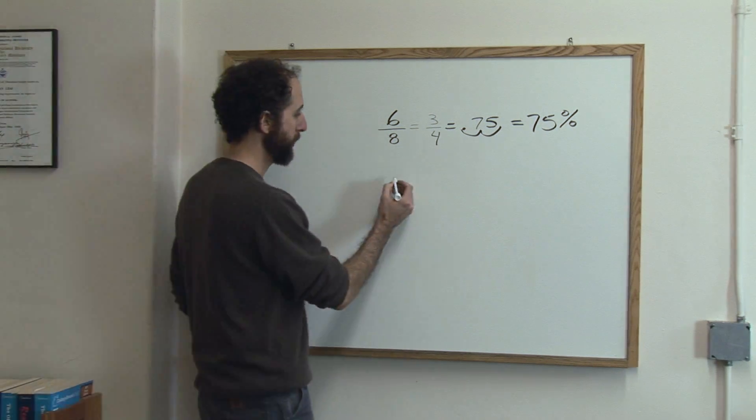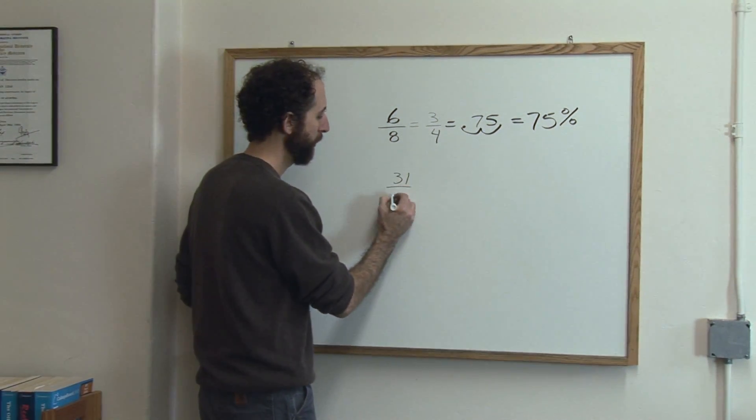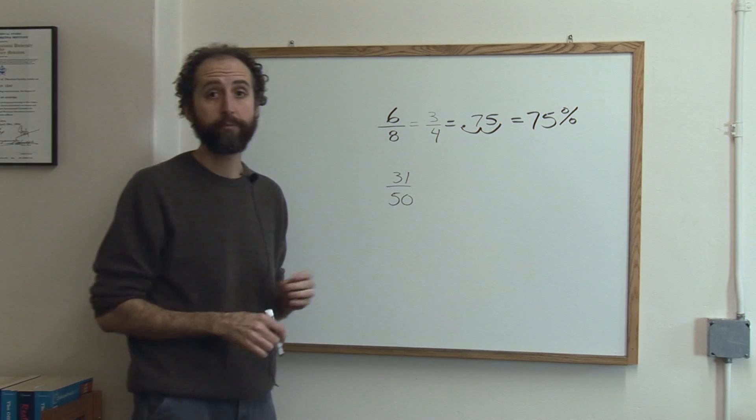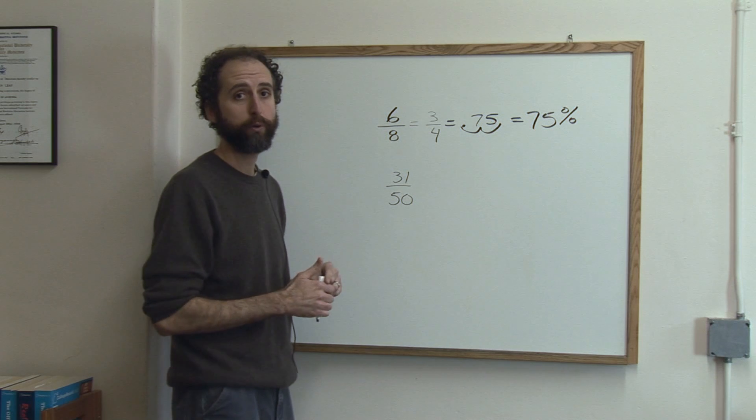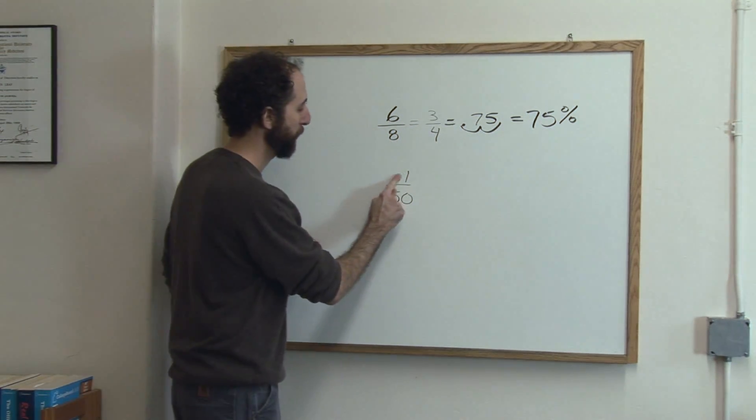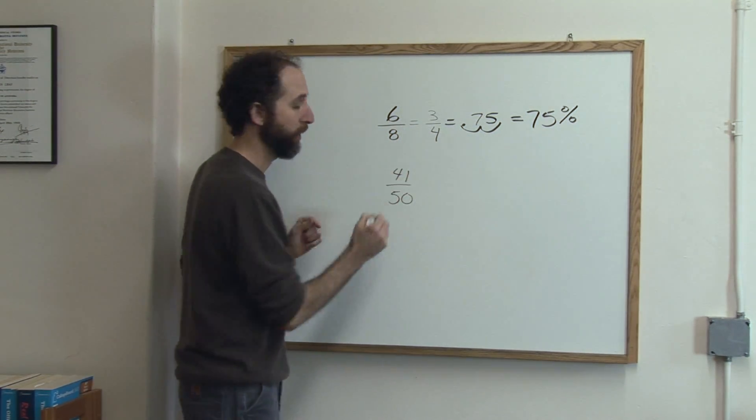Let's take a look at one more. Let's say you got 31 out of 50. That's a score a teacher might give you on a quiz or test, and you'd want to know what percentage that is. Actually, let's make it a little better because that wouldn't be a great score. Let's use 41 out of 50.